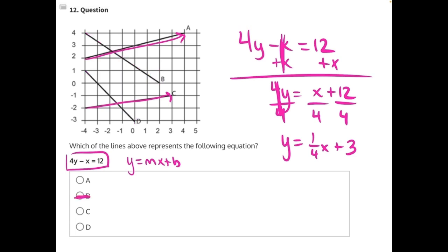So we can eliminate b and we can eliminate d. Then we're looking for a line that passes over the y-axis at positive 3.